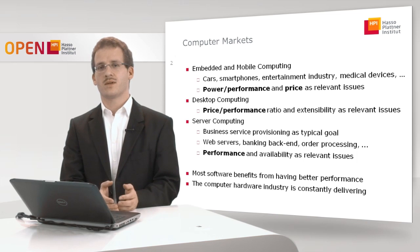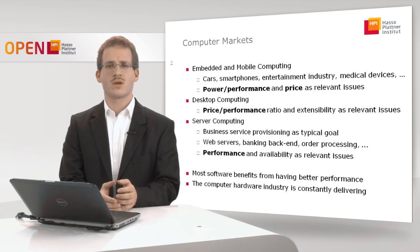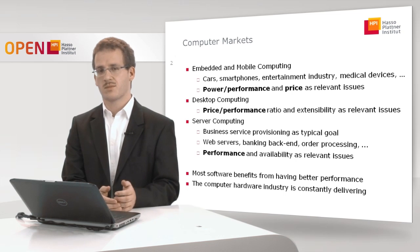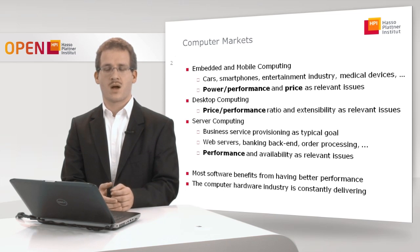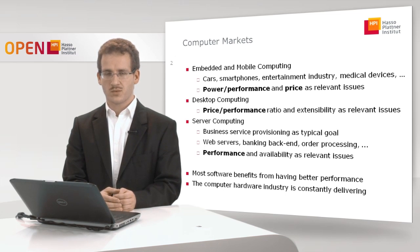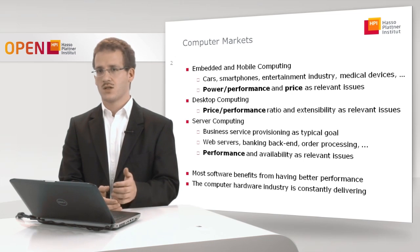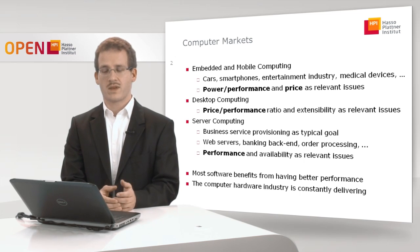When we look into the situation, it turns out that most software, regardless of the computer market, can benefit from better performance. Whatever you do to increase the performance of your software — make it faster or let it compute more data — makes the actual target market better. The computer hardware industry got used to this fact and constantly delivered new hardware like GPU hardware, modern processors, and embedded hardware in order to deal with that issue.